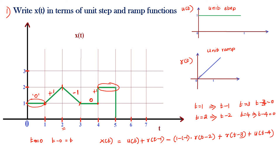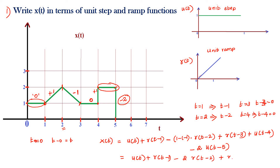Next, the magnitude decreases by minus two. The starting point here is t = 5, so this term is minus two times u(t − 5). Collecting all terms, the full equation is: x(t) = u(t) + r(t − 1) − 2r(t − 2) + r(t − 3) + u(t − 3) + u(t − 4) − 2u(t − 5).